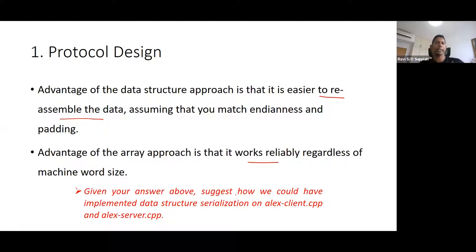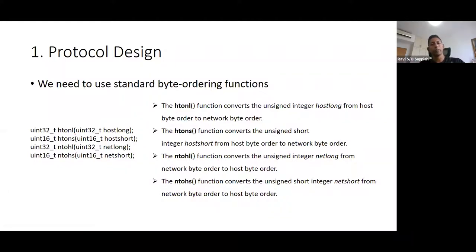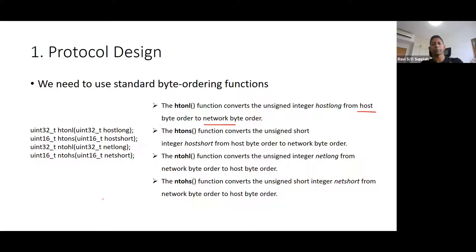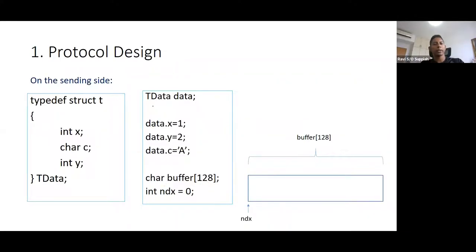How could we implement data structure serialization? First, we need to understand byte ordering — this is where the indianness is taken care of. We have standard functions to convert from one order to another, such as host to network and network to host. Using these functions, we can be sure that the data will be reorganized in the correct endian format between one side and the other.